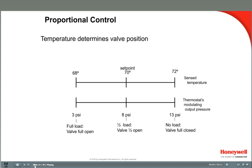The operation and calibration of pneumatic controllers makes more sense when we thoroughly understand proportional control principles. Set point is the desired temperature, and control point is the current room temperature. The difference between these two temperatures is called offset. Throttling range is found in all modulating control systems, from pneumatic to modern DDC systems. Throttling range is the change in degrees that will cause the valve to go from full open to full closed. With a set point of 70 degrees and a throttling range of 4 degrees, the range is 68 to 72 degrees, and the valve or damper modulates to a partially open position when the control point is within this range.